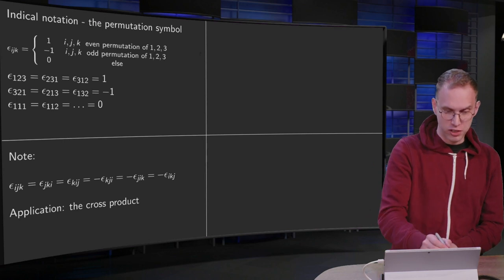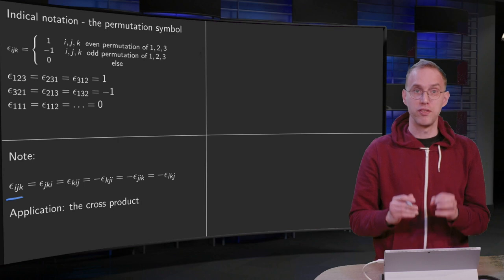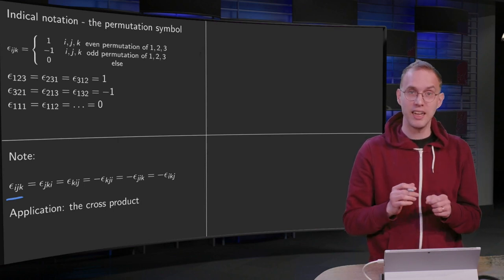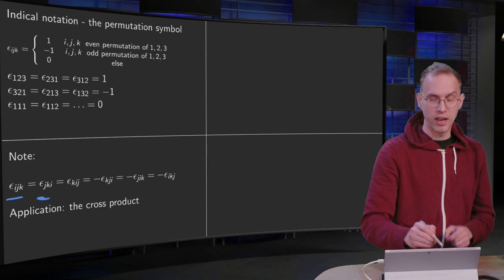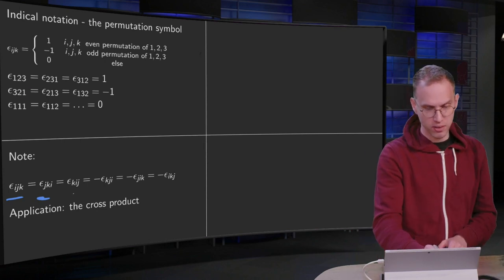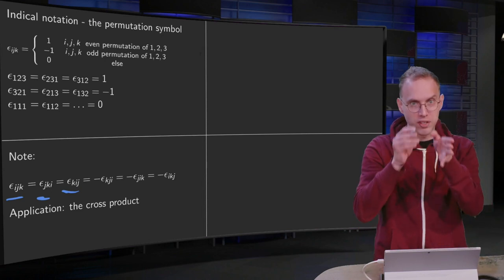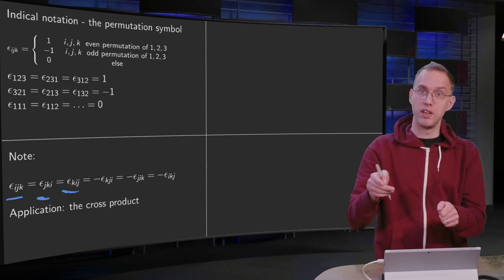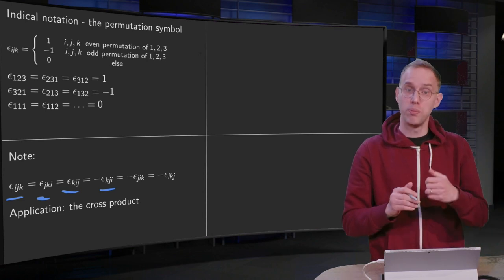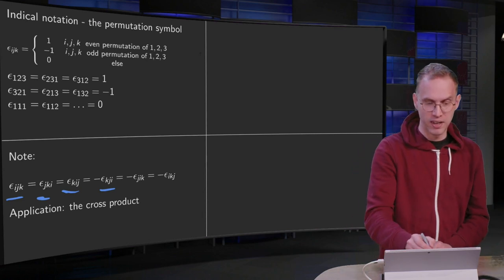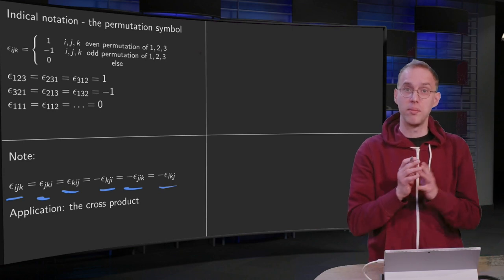To summarize the structure more generally: if you start with epsilon_ijk, you can put the i at the back and get the same value, then put the j at the back and still keep the same value. However, if you reverse the order to epsilon_kji, you pick up a sign change, and applying the same cyclic trick keeps that sign.